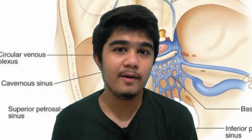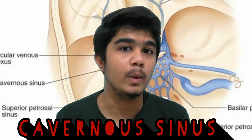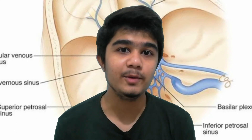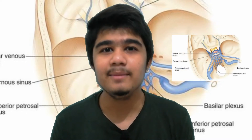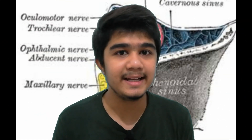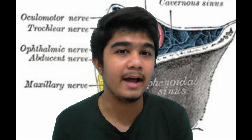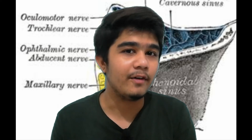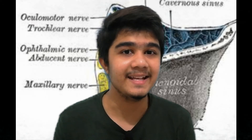Now I used the word cavernous sinus twice — so what is the cavernous sinus? The cavernous sinus is located in the head, on either side of the sphenoid bone. Medially it is related to the pituitary gland, and laterally it is related to the third nerve (oculomotor), fourth nerve (trochlear), and the ophthalmic nerve — all of which are related to the eye.